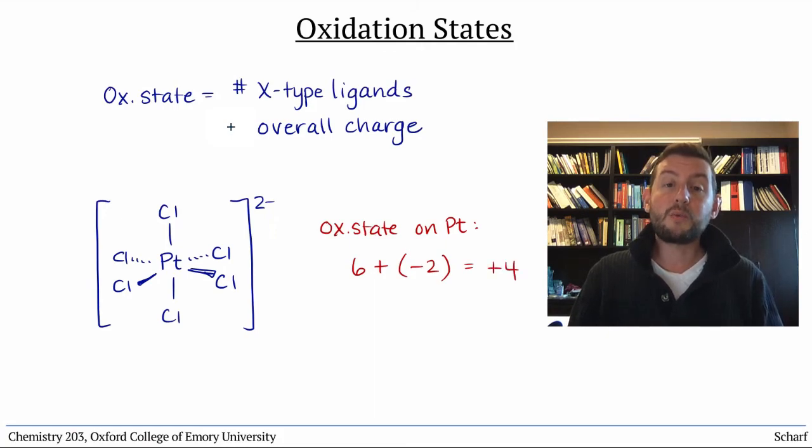When talking or writing about metal ions with a particular oxidation state, we often use Roman numerals in parentheses. So, we might talk or write about PtCl6 2- as containing platinum 4 or Pt(IV).